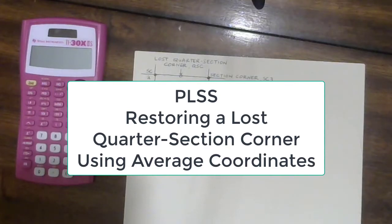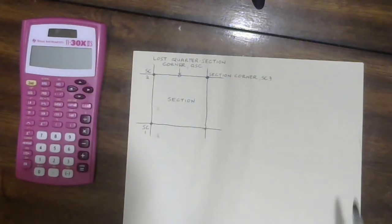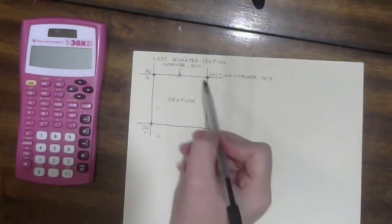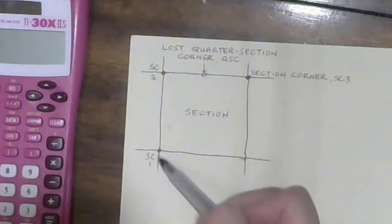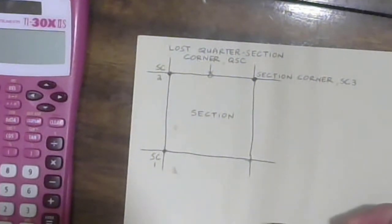I wanted to give you a problem with the public lands survey system that seems complicated but is really not. So we have here section corners and ostensibly there's a section corner there as well.